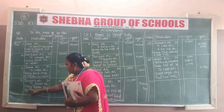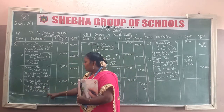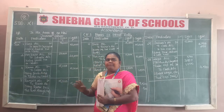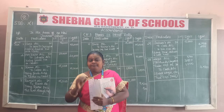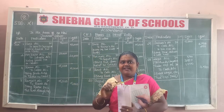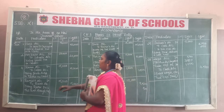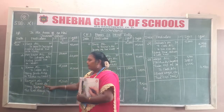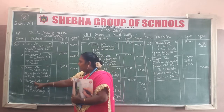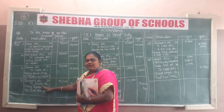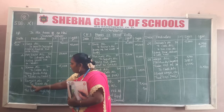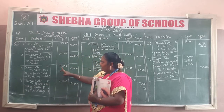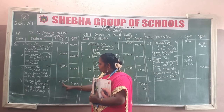Next transaction: Ramu pays the amount through a check. The entry is: Bank account debit to Ramu's account. Ramu is the giver, so what goes out is cash/bank. The amount is Rs. 15,000.